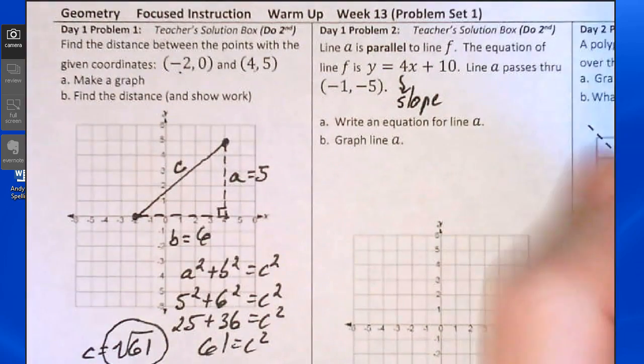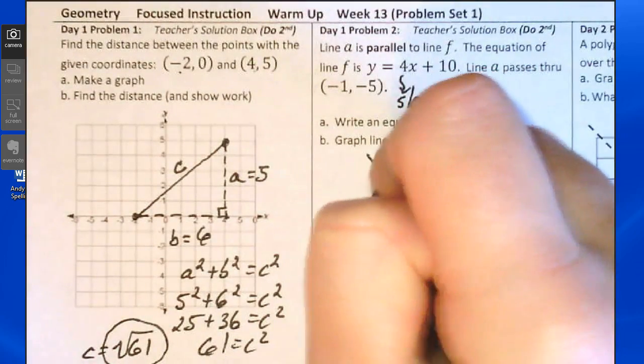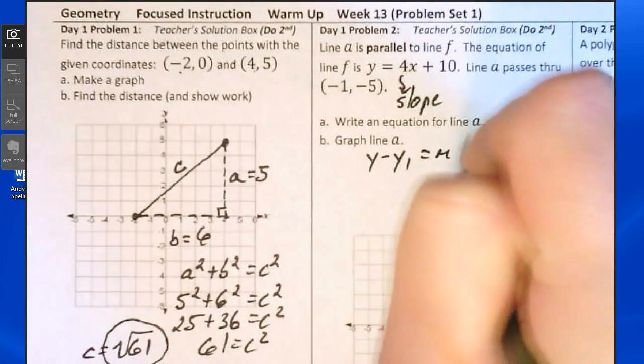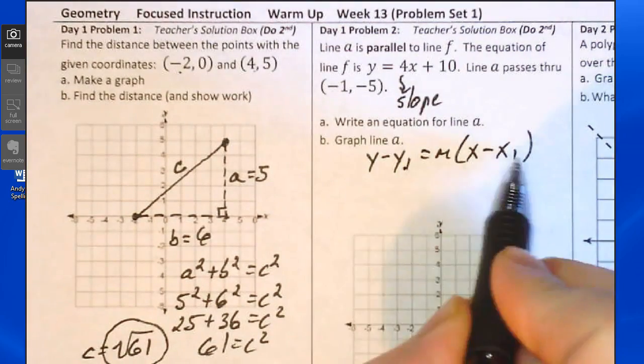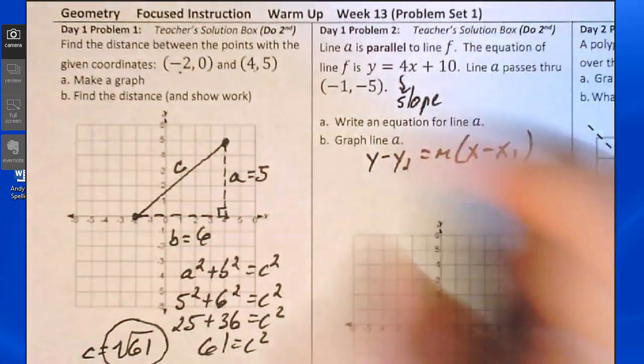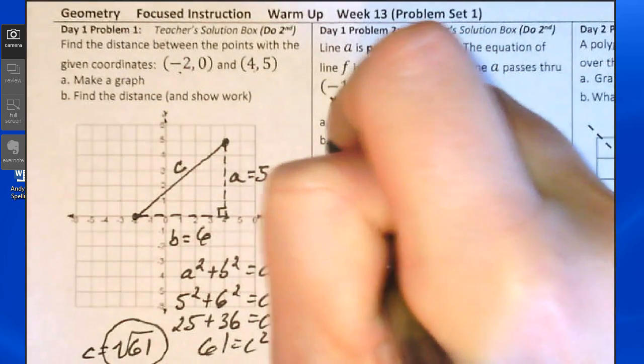We can do that with the point-slope formula. y minus y1 equals m times x minus x1. The y1 and the x1 are coordinates of a point on line A. That's these numbers.